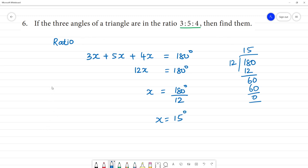So, the angles: first angle is 3x. 3x is equal to 3 into 15. That is equal to 45 degree.